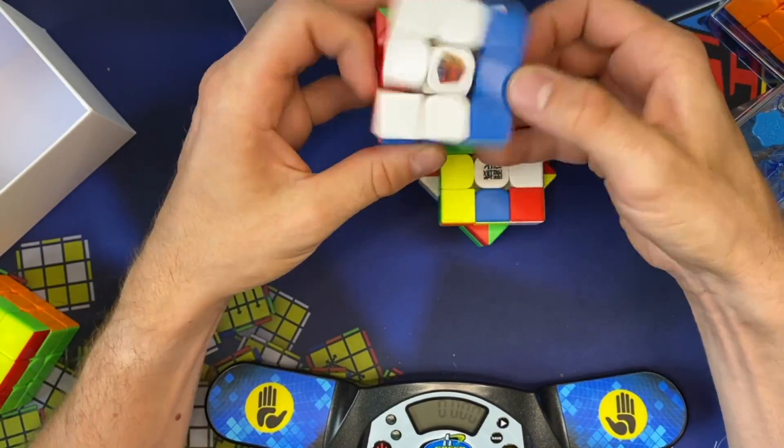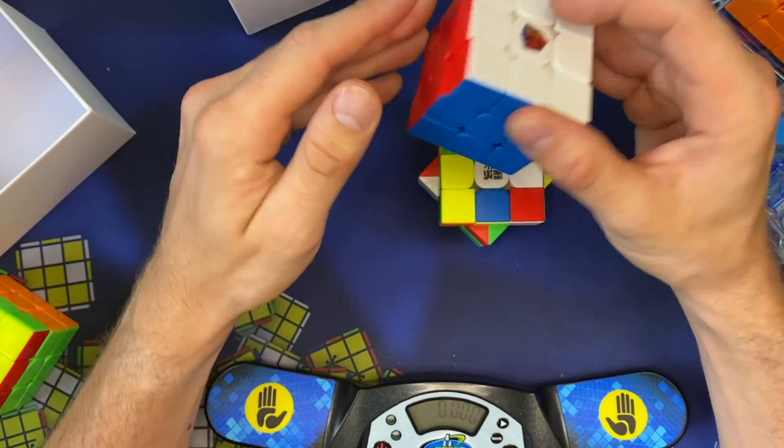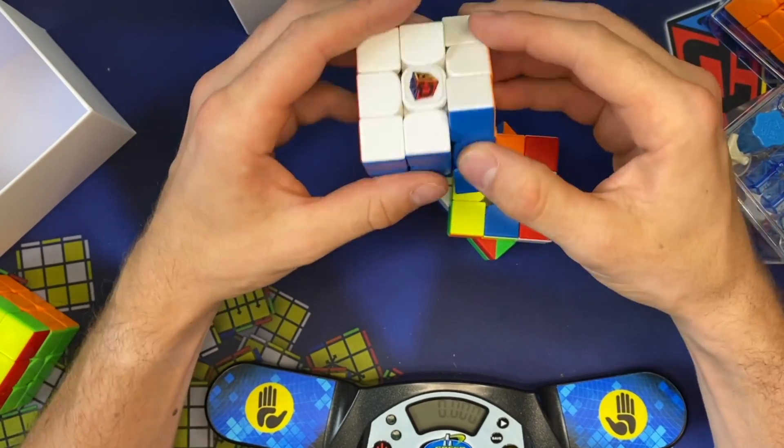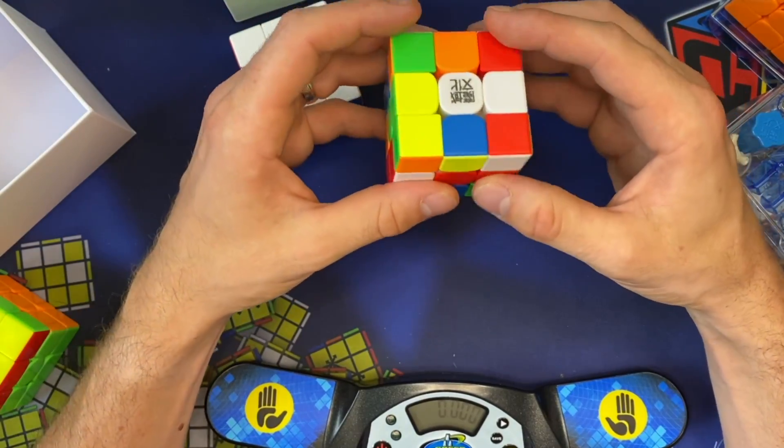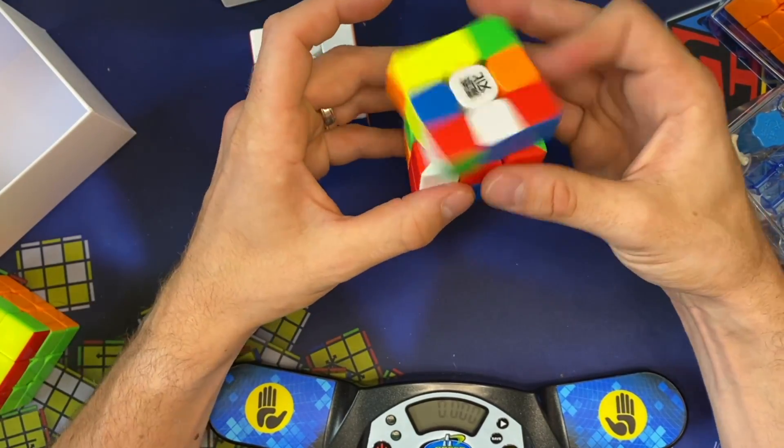So compared to this one, which was the RS3, I would almost consider the RS3 as like a very stable version of the WRM. So if you want something that's stable, the RS3 is good. If you want something that's more flexible, the WRM.